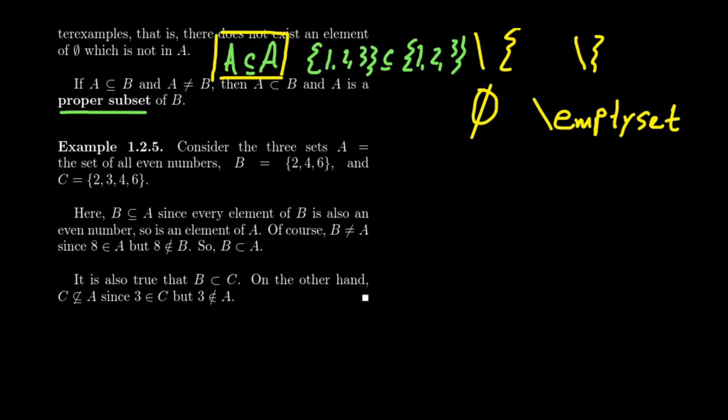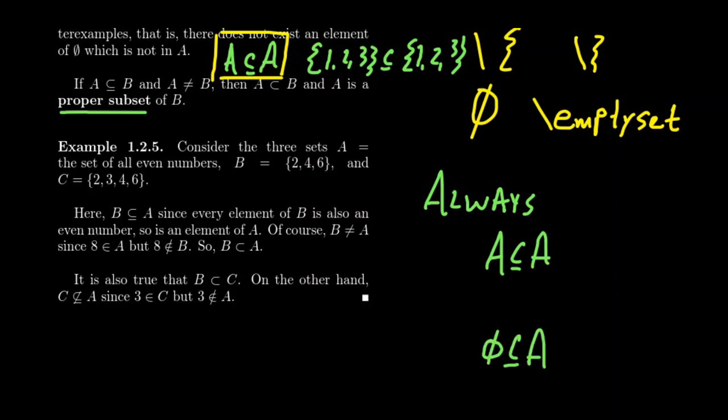So given any set under the sun, you always have the following statements. Always. Given any set A, A will be a subset of itself and the empty set will be a subset of A. That's always true. Now, what subsets live in the middle? Well, that depends a whole lot on A. And so we often look for these proper non-trivial subsets. The improper subset referring to the whole set itself. The trivial subset being the empty set.